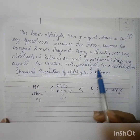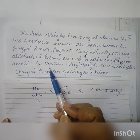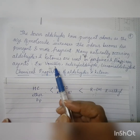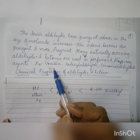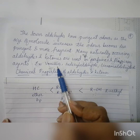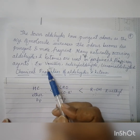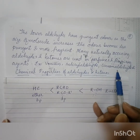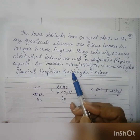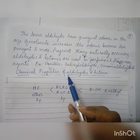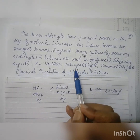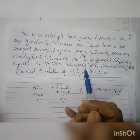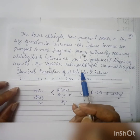Many naturally occurring aldehydes and ketones are used in perfumes and flavoring agents. For example, vanillin — the vanilla essence used in ice creams and milkshakes — is extracted from vanilla beans and belongs to this class. Other examples include salicylaldehyde and cinnamaldehyde. The smell of wintergreen oil comes from methyl salicylate, a derivative of salicylaldehyde. These compounds provide various pleasant odors.